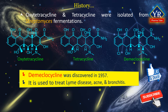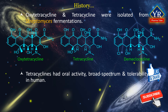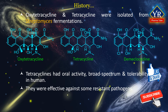Shortly thereafter, in 1957, demeclocycline was discovered. Demeclocycline is used as an antibiotic in the treatment of Lyme disease, acne and bronchitis. After elegant structural elucidation that relied mostly upon degradation studies, the tetracyclines were recognized as a class of new antibacterial agents. The tetracyclines were soon established as landmark antibiotics due to superb oral efficacy, broad spectrum antibacterial activity, and exceptional tolerability in man. Furthermore, the tetracyclines were effective against some pathogens resistant to existing beta-lactam antibiotics.